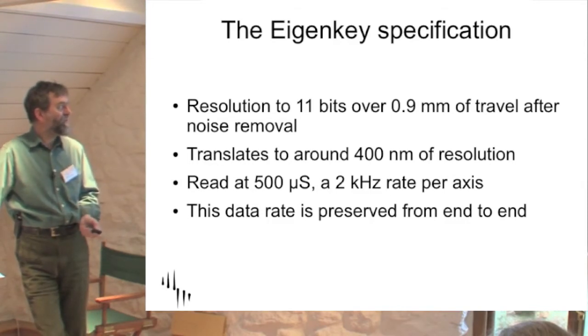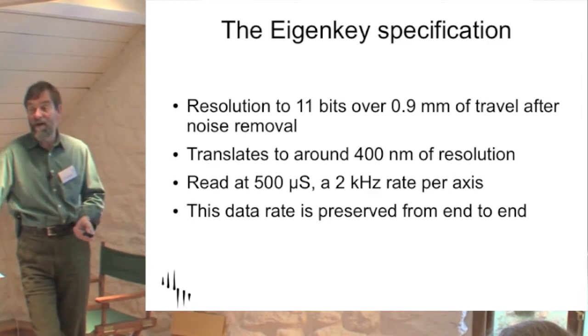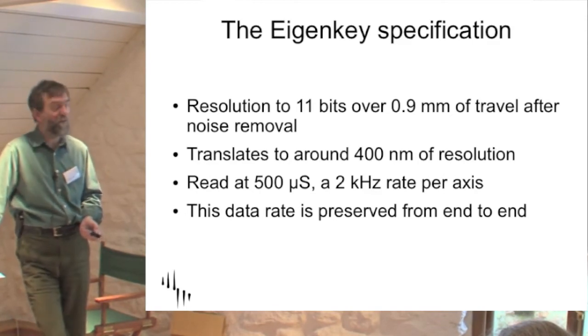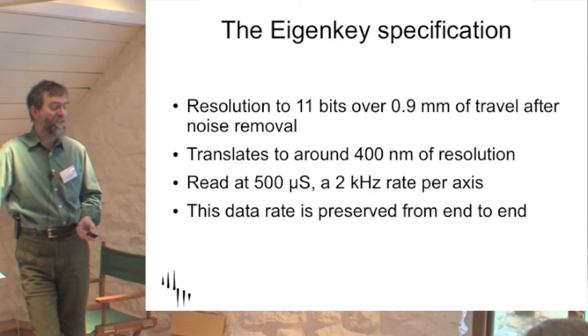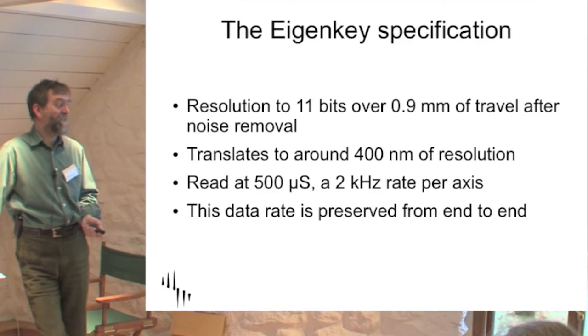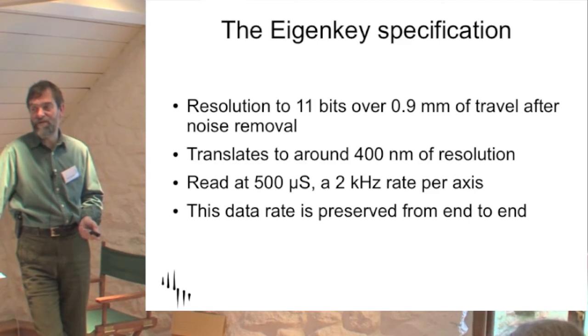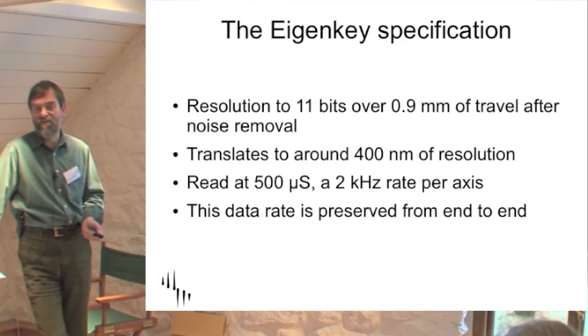The eigenkey specification is the resolution is to 11 bits, which for you guys will actually have a meaning. And that's one part in 2048. That's right. It doesn't have 11 bits to it for it. Over 0.9 of a millimeter of travel after noise removal. That's after we've taken the noise out of all the sampling process. And that translates to around about 400 nanometers of resolution. This is a number at the AES that people didn't really believe. And only believed after I told them exactly how much effort we've gone to to attain it. And it's actually a real number. So when you play your Eigenharp and you feel how sensitive it is, that's why. It's sensitive. It's astonishingly sensitive. 400 nanometers is tiny. It really is tiny. You couldn't see that detail with an optical microscope. Or an old-fashioned optical microscope. You could with modern ones.